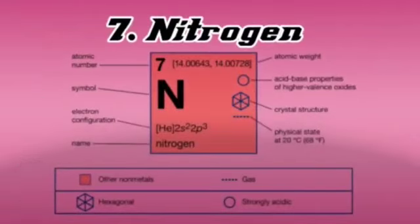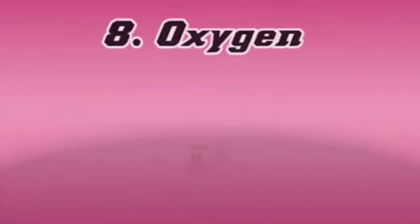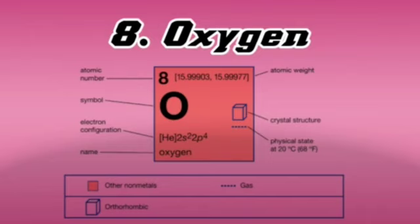The next element is Nitrogen. Nitrogen is an odorless, tasteless gas that is the most plentiful element in Earth's atmosphere and a constituent of living matter. Its standard atomic weight is 14.00643–14.00728 and its atomic number is 7. It is in group 15, non-metallic chemical element.